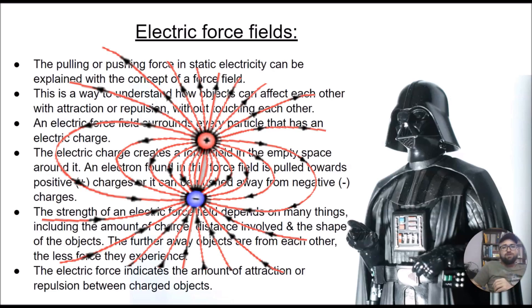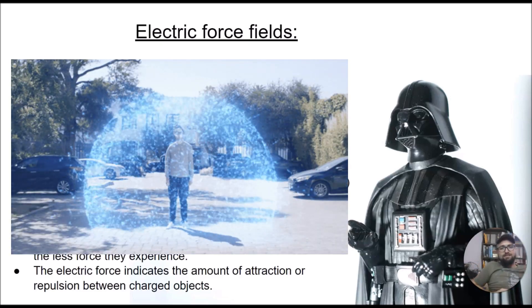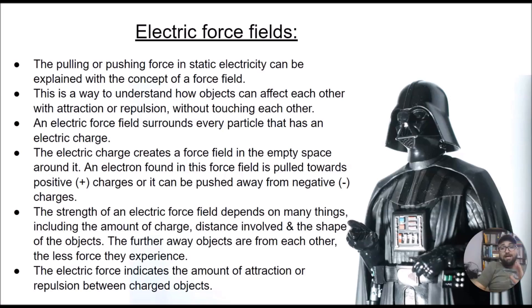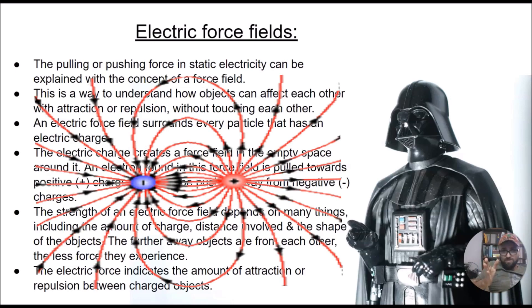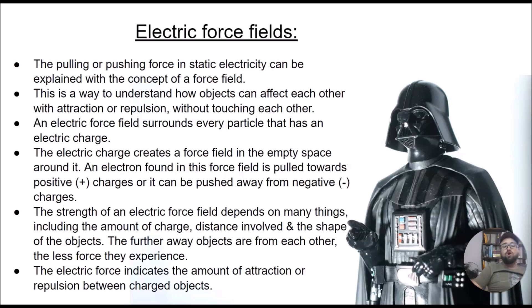An electric force field surrounds every particle that has an electric charge. For instance, even a cell phone has an electric force field around it. You will notice that when you take a magnet closer to your screen, it actually interrupts the signal and the force field itself. Electric charge creates a force field in the empty spaces around it. An electron found in this force field is pulled towards the positive charges or it can be pushed away from the negative charges. The strength of an electric force field depends on many things including the amount of charge, the distance involved, and the shape of the object. The further away objects are from each other, the less force they experience. The electric force indicates the amount of attraction or repulsion between charged objects.